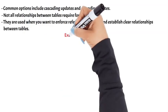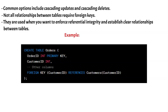Example. In this example, the customer ID column in the customers table is the primary key, uniquely identifying each customer. The customer ID column in the orders table is a foreign key that establishes a relationship with the customer ID primary key column in the customers table. This ensures that orders in the orders table can only reference existing customers in the customers table, maintaining referential integrity.